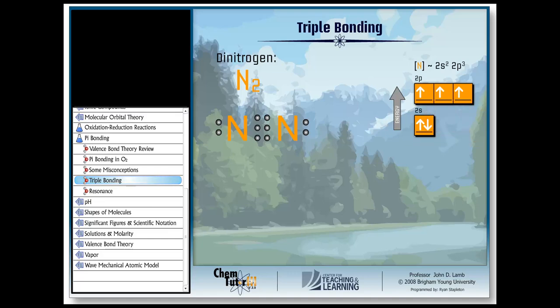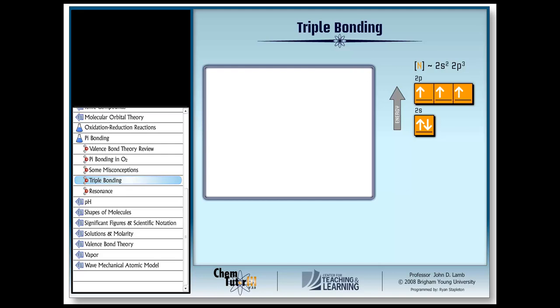Just as for dioxygen, we can form one bond by overlapping end-to-end p orbitals like this. We can then form a second bond by side-by-side overlap of adjacent p orbitals like this. Look familiar? Nothing new so far.